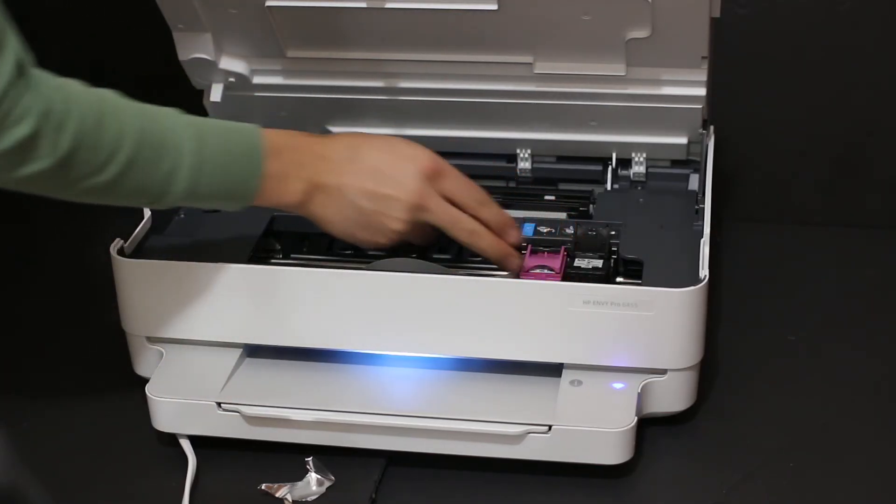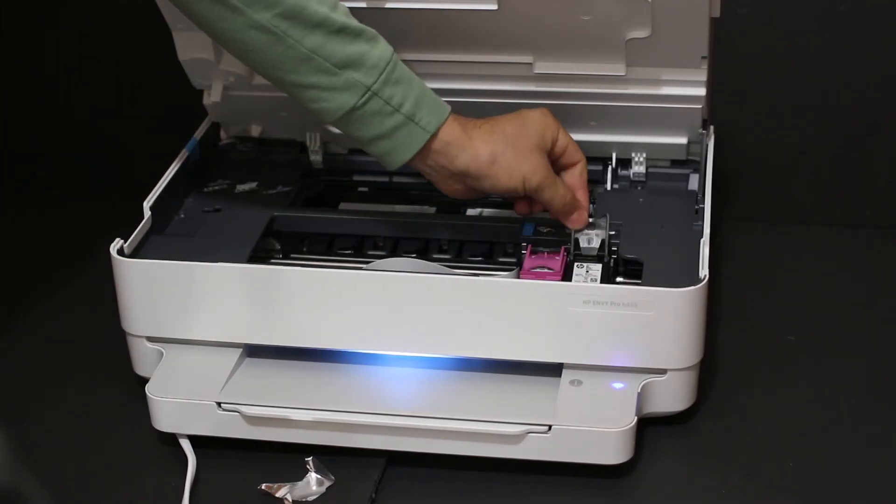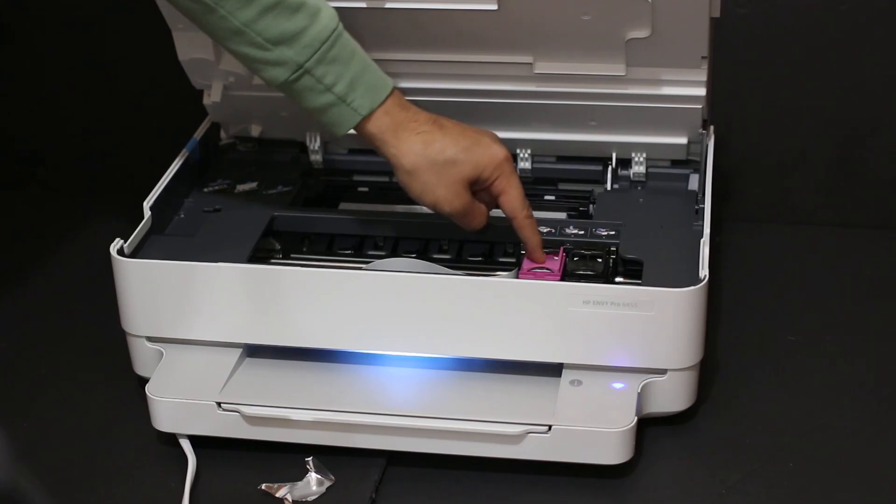Same with the black ink cartridge—place it here, slide it in a little bit, and lock it with this flap. These locks are present.